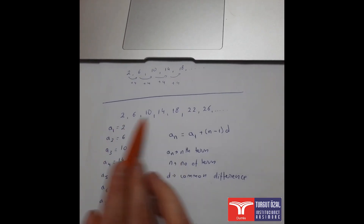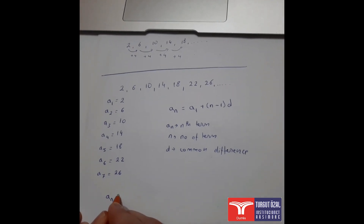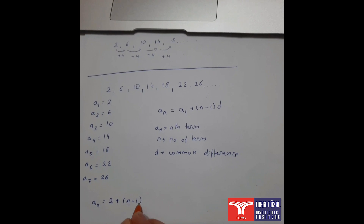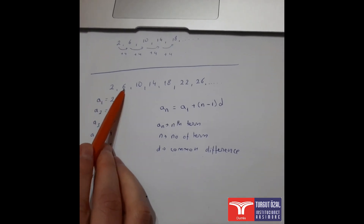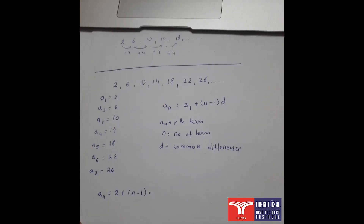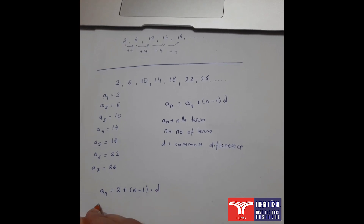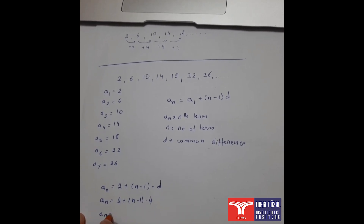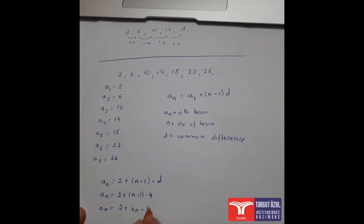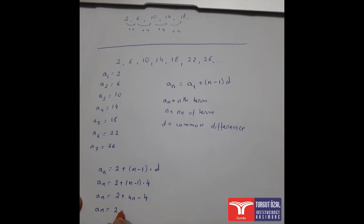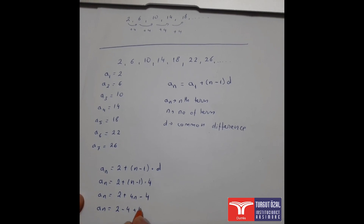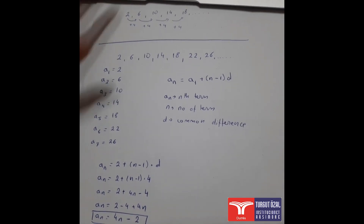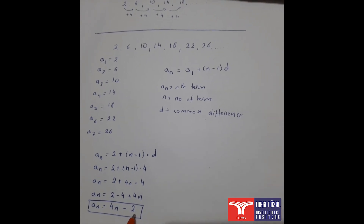Now let's find the rule for this sequence. an = a1 + (n − 1) × d. The first term a1 is 2, and the common difference d is 4 (since 2 to 6 is plus 4, and so on). So an = 2 + (n − 1) × 4 = 2 + 4n − 4 = 4n − 2. So the nth term of this sequence is 4n − 2.